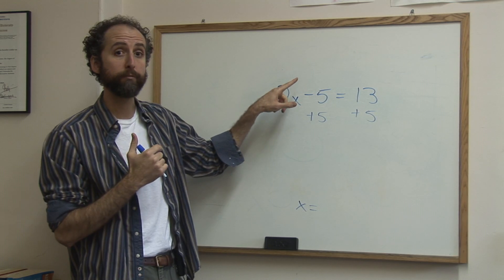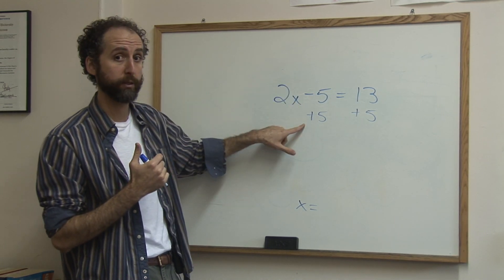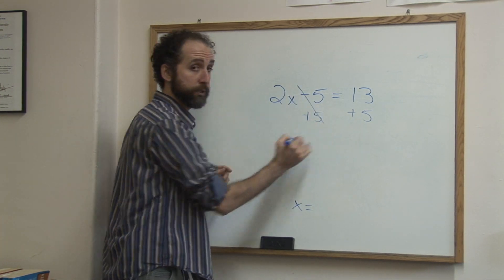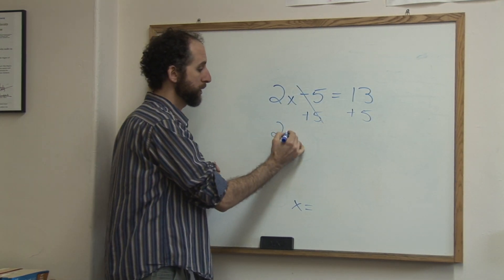The way to get rid of a minus 5, the way to remove it, is to do the opposite, the inverse. So minus 5, we're going to add 5, because negative 5 plus 5 cancels, leaving us 2x alone.